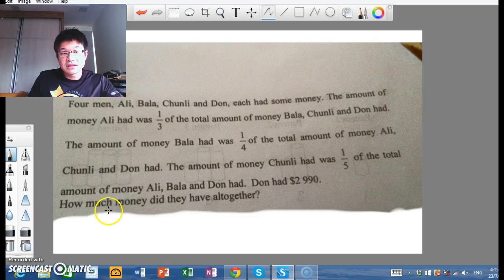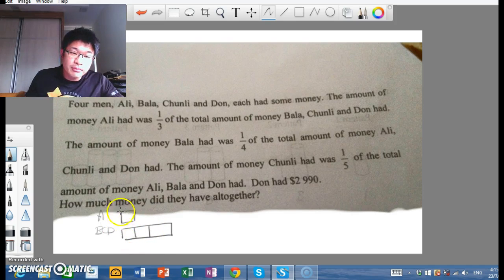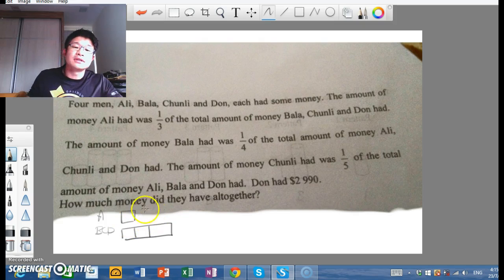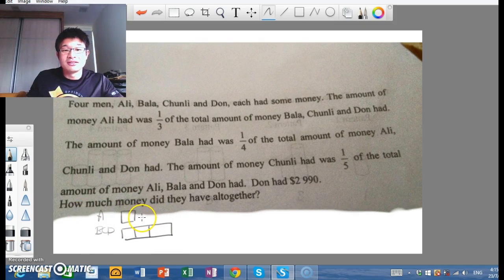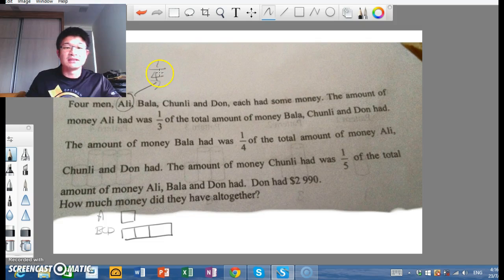When we talk about the first one, Ali had one-third. So when we talk about Ali and then B, C, D, Ali actually has one piece. B, C, D has three. So when we compare Ali with the total, Ali actually has one-quarter. Do you get what I'm saying? Ali actually has one-quarter the total amount of money.